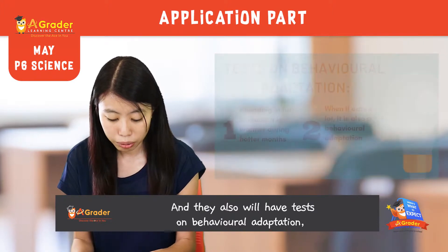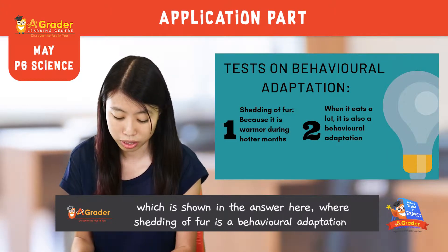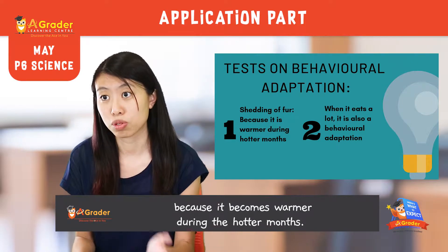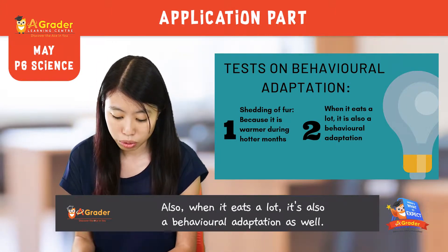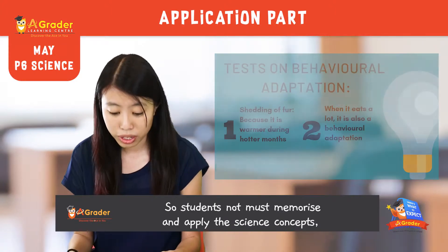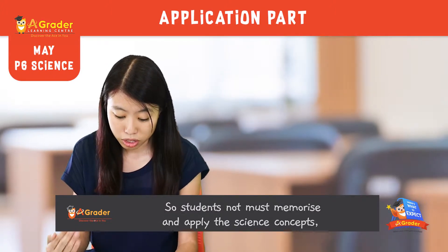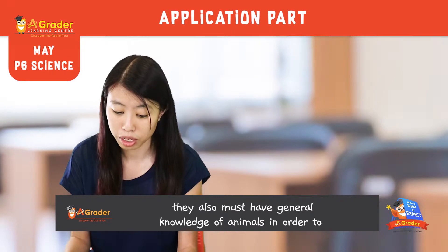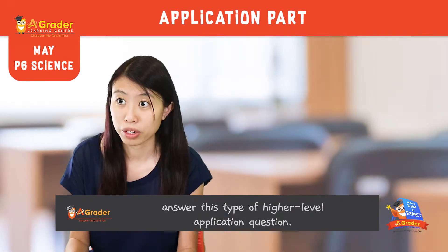They also have a question on behavioural adaptation, shown in the answer here, where shedding of fur is a behavioural adaptation because it becomes warmer during the hotter months. And also, when the bear eats a lot, that is also a behavioural adaptation. So as you can see, students must not only memorise the science concepts in their textbook, but also have general knowledge of the animal in order to answer these higher level application questions.